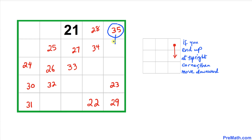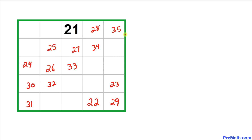Here is another rule: whenever we end up at the top-right corner, we always move downward rather than diagonally. Since 35 is in the top-right corner, we move downward and place 36.